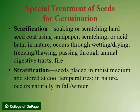There are special treatments of seeds for germination to occur. Scarification is the soaking or scratching of the hard seed coat using sandpaper or an acid bath. In nature, this occurs through wetting and drying, freezing and thawing, passing through an animal's digestive tract, or by fire. Another treatment is stratification, in which seeds are placed in moist medium and stored at cool temperatures. In nature, this occurs naturally during the fall and winter months.